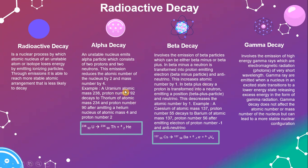Let's look at an example with uranium. Uranium has an atomic mass of 238 and a proton number of 92. It decays and its atomic mass becomes 234, because the mass number is reduced by 4. Meanwhile, the proton number of the resulting thorium is 90, after emitting a helium nucleus of atomic mass 4 and proton number 2.